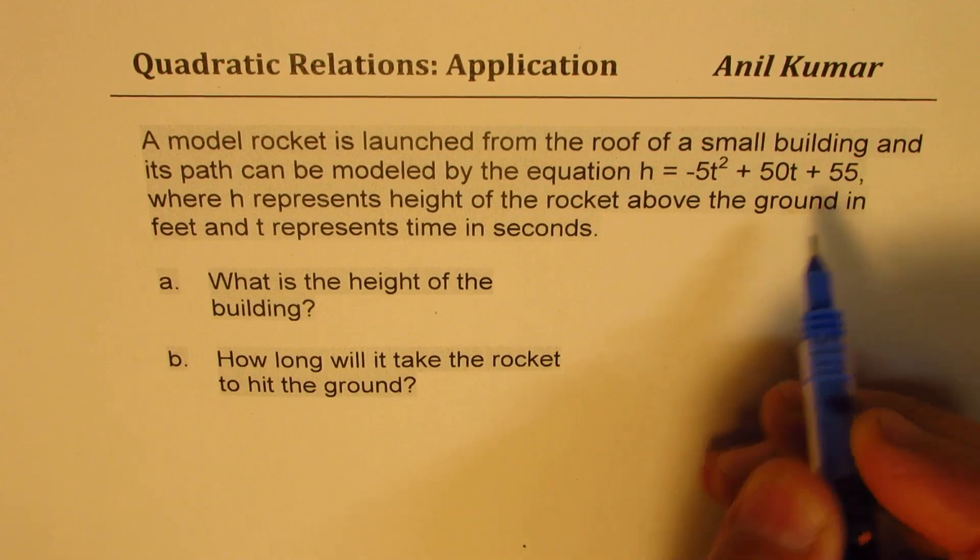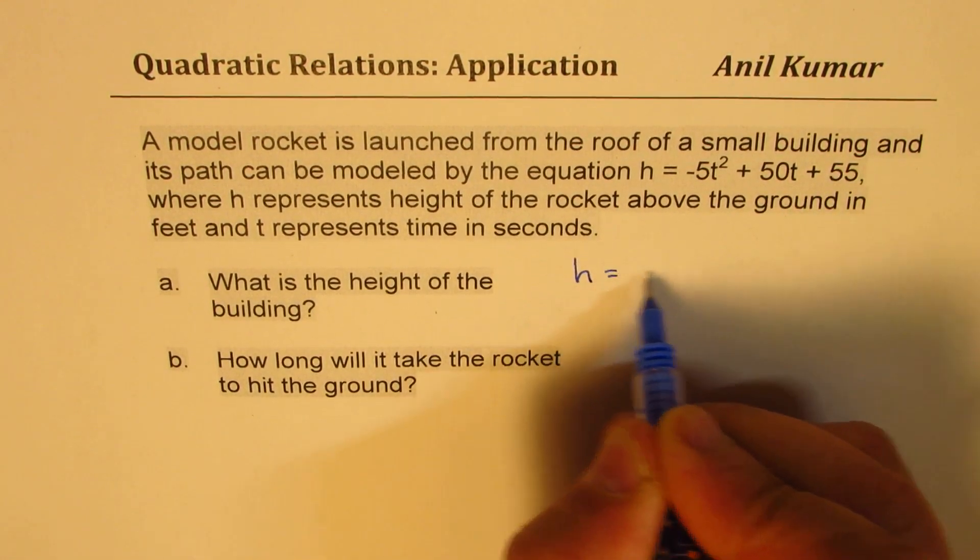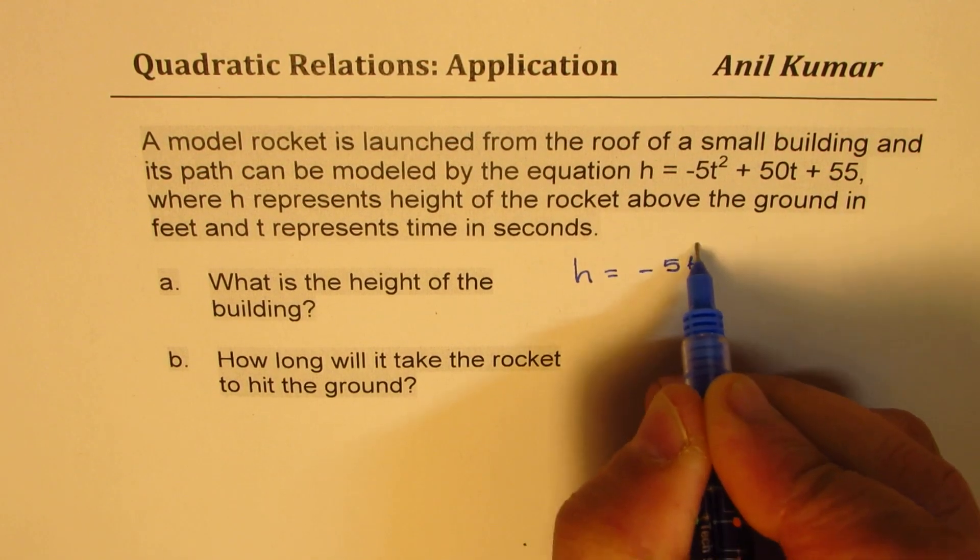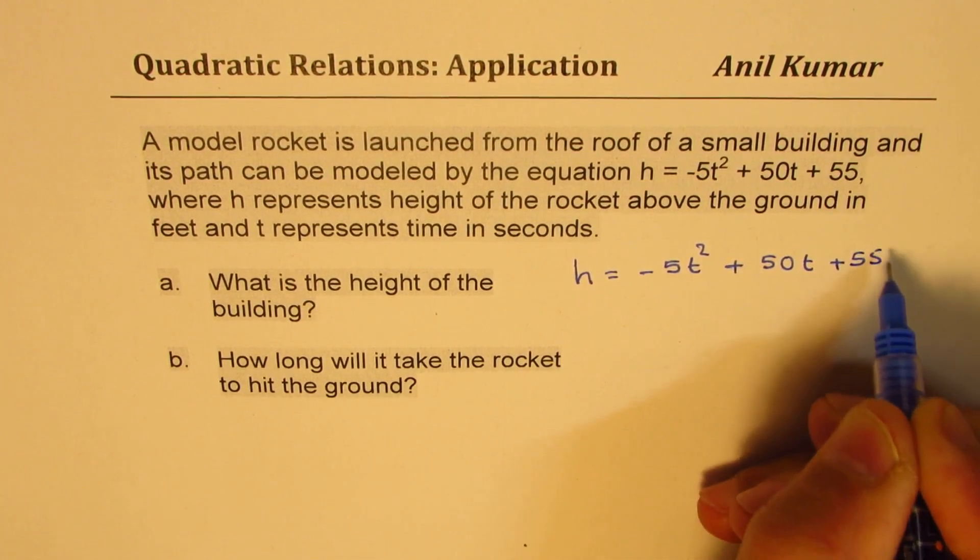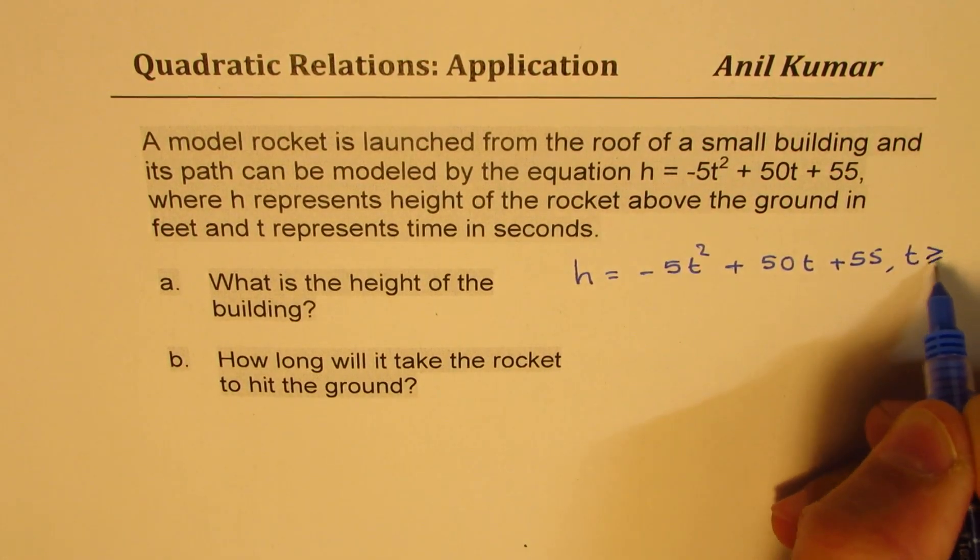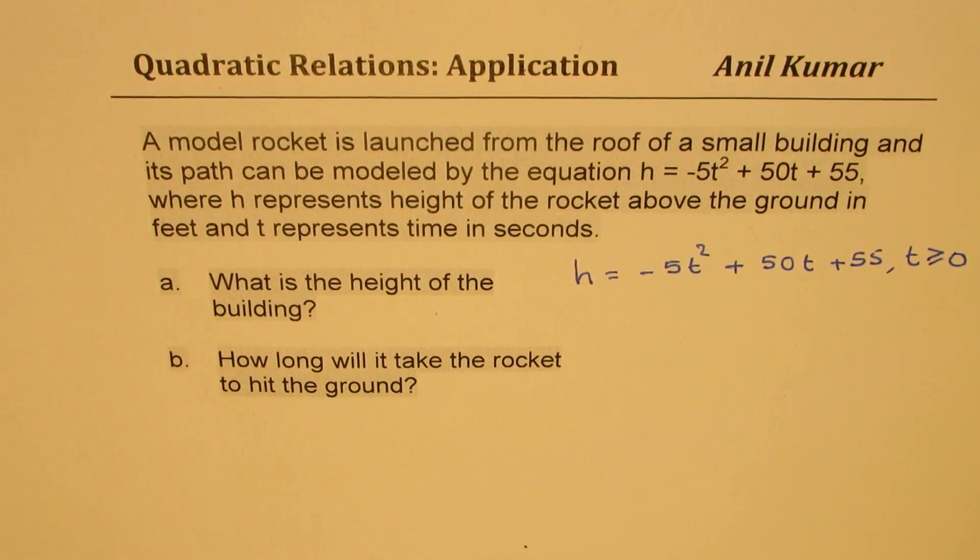So in this particular equation, which is H equals minus 5T squared plus 50T plus 55, you should know T is greater than or equal to 0.